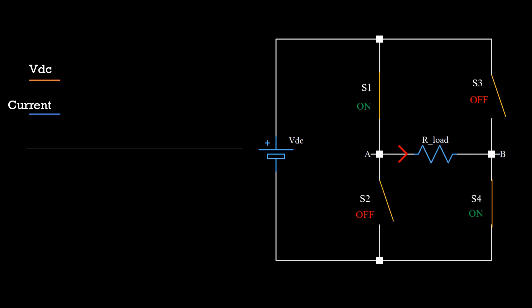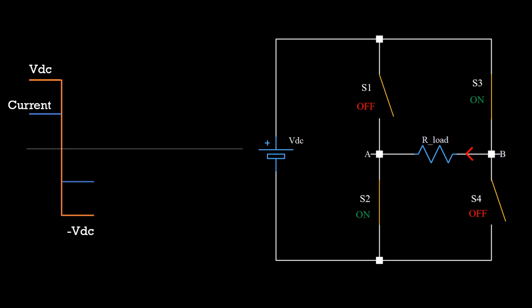Now I can swap the state of switches. S2 and S3 go on and S1 and S4 are off. In this case, the voltage across the resistor is minus VDC. Hence, the current will flow from B to A. If you keep repeating this, what you will get is a periodic wave whose average is 0 and it is an AC waveform.